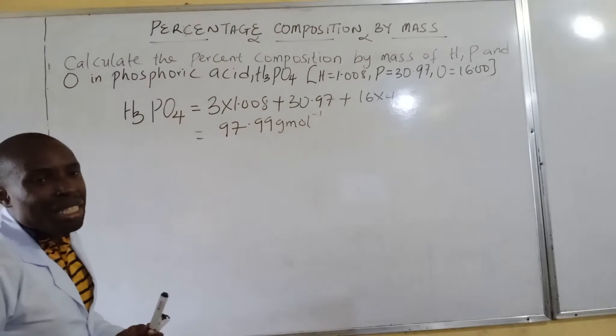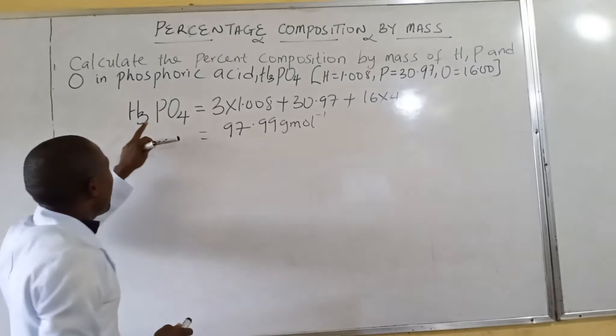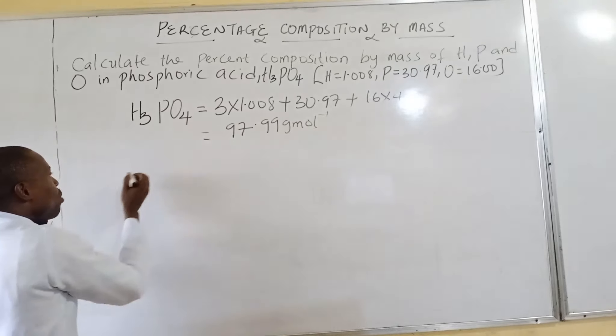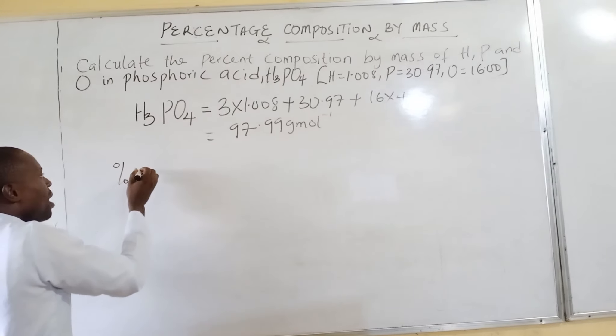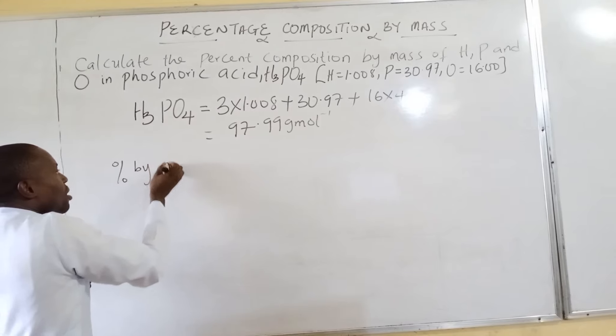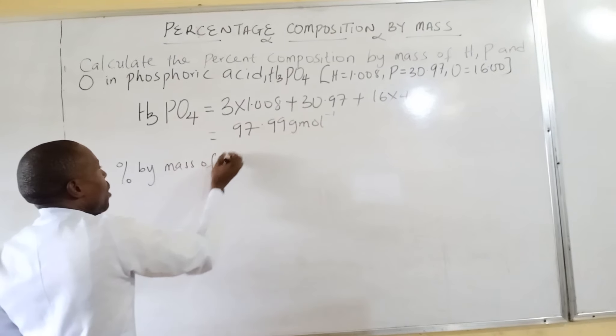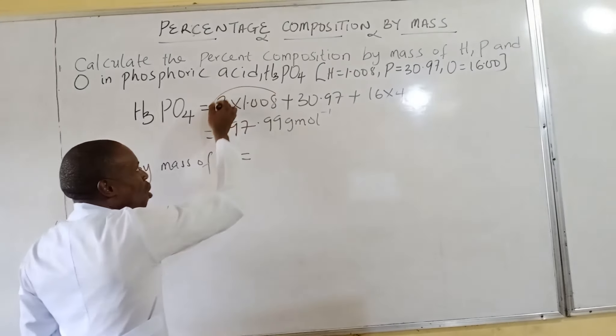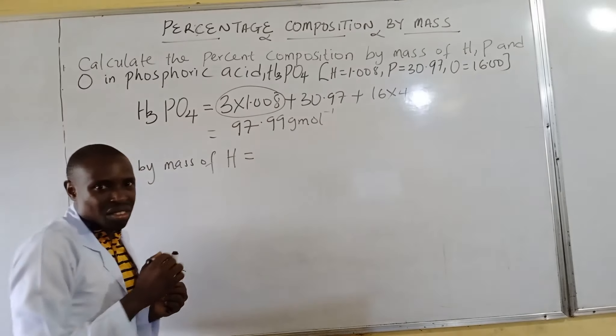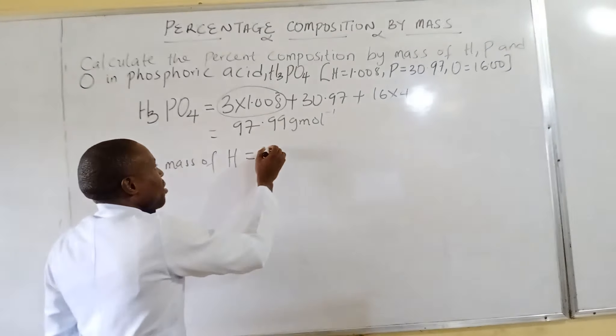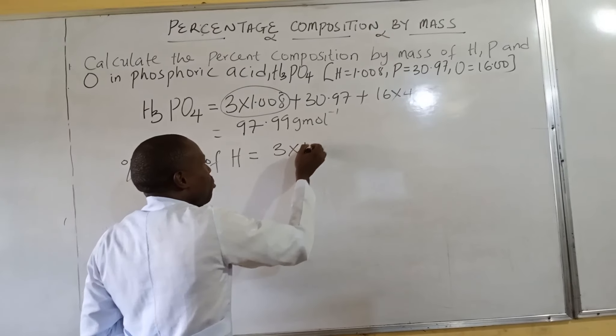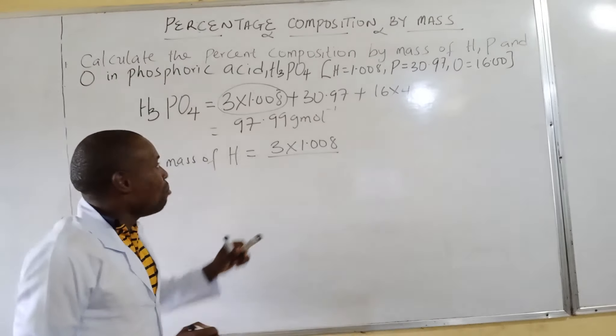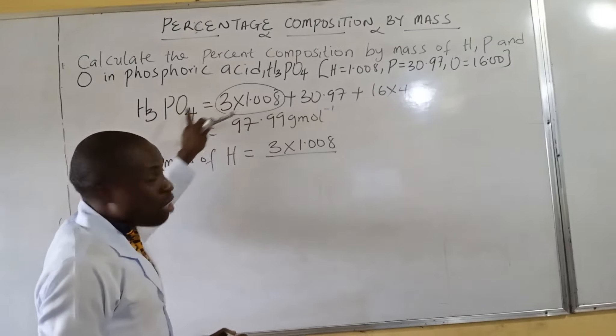The percentage by mass of hydrogen is equal to the mass of hydrogen, which is 3 times 1.008, over the molar mass of the compound, which is 97.99.